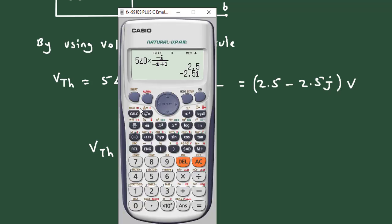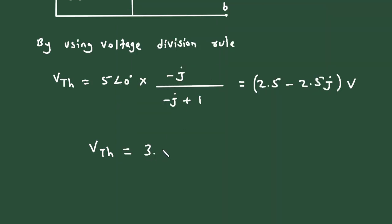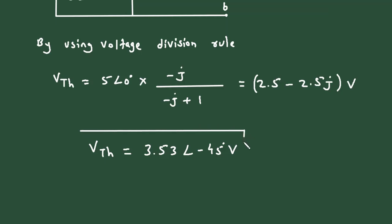In polar form this will be 3.53, 3.53 at an angle minus 45 degree volt. And since it is a voltage, its unit will be volts.